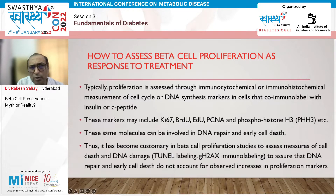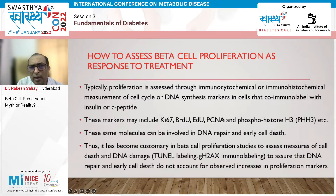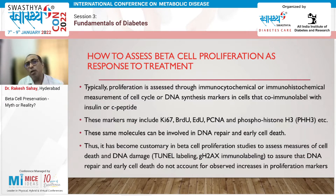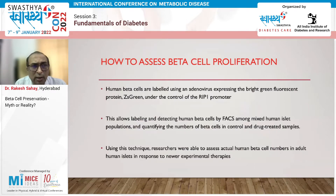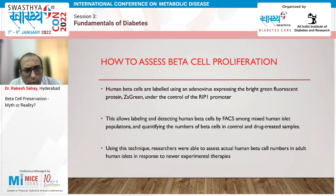This is not a longitudinal measurement, but you look at markers present in replicating cells. If these markers are seen, we say beta cells are proliferating. There are limitations, but this is generally used to understand whether beta cells are proliferating. Labeling and detection of human beta cells among mixed human islet populations and quantifying numbers in control versus drug-treated samples is how beta cell proliferation is studied.